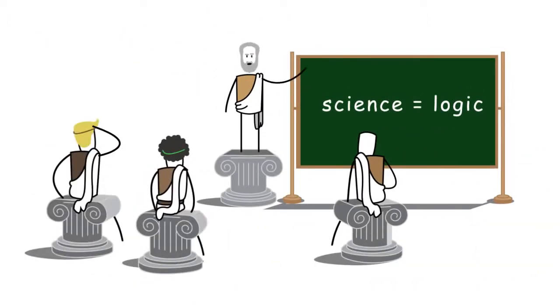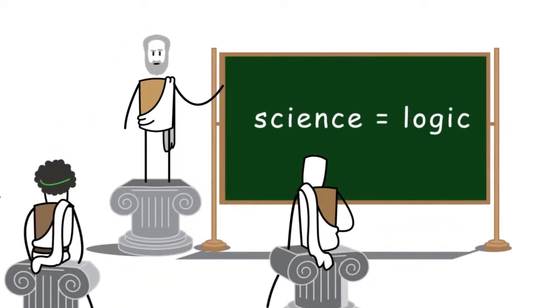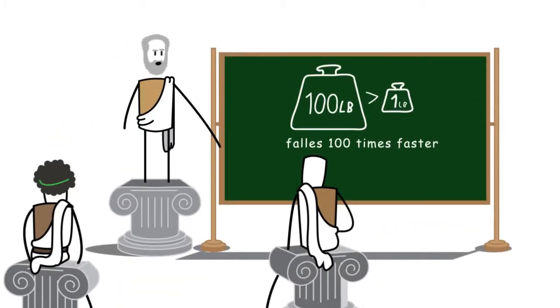Galileo overturned the Aristotelian worldview according to which the world can be explained primarily through logic. For example, Aristotle had claimed that the velocity of falling bodies is relative to their weight. Logically, even intuitively, that might sound right.